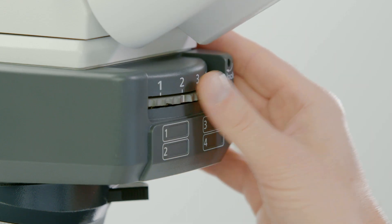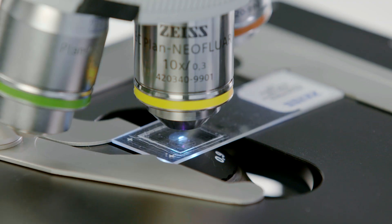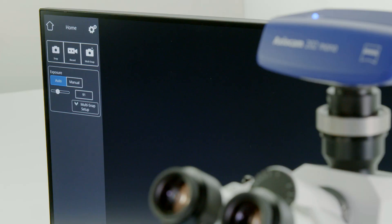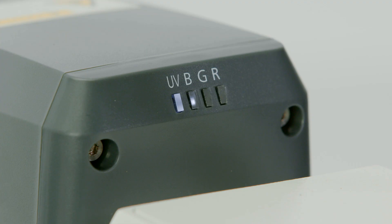Switch to the reflector position containing an appropriate multi-bandpass fluorescence filter. Then define the relevant fluorescent LEDs for excitation suitable for your sample via the on-screen display. For the sample shown, it is UV, blue, and green.